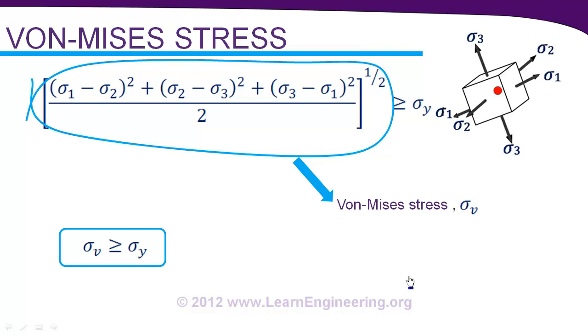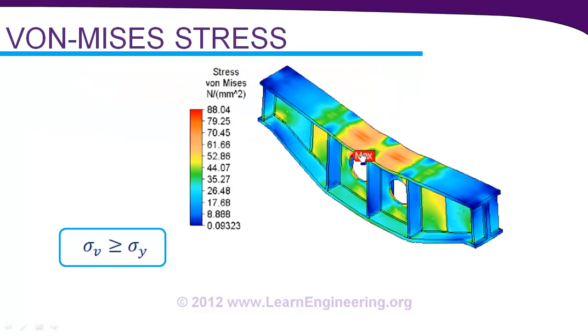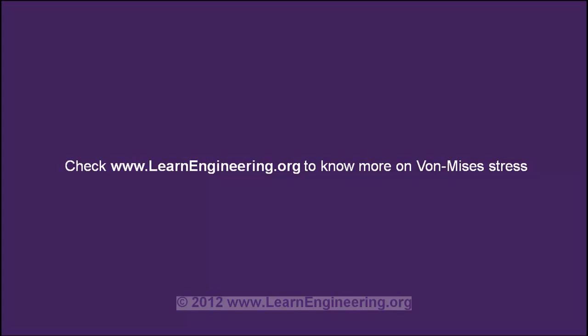So task of engineer is easy now. He can just find out maximum value of Von Mises stress inside the material and he can compare whether it is exceeding yield strength of the material. If it exceeds, then material fails. Of course he can put some factor of safety in between if he wants a safe design. Thank you for watching the video. Hope you got a good insight on Von Mises stress.